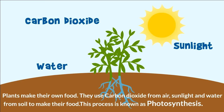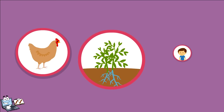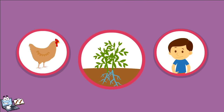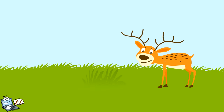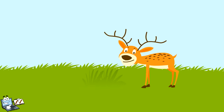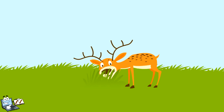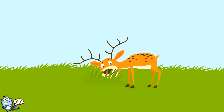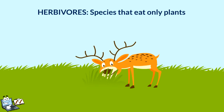Plants make their own food, and we humans and other living organisms depend on plants for food. Look closely — a deer is coming and it's eating the plant. Species that eat only plants and herbs are called herbivores.